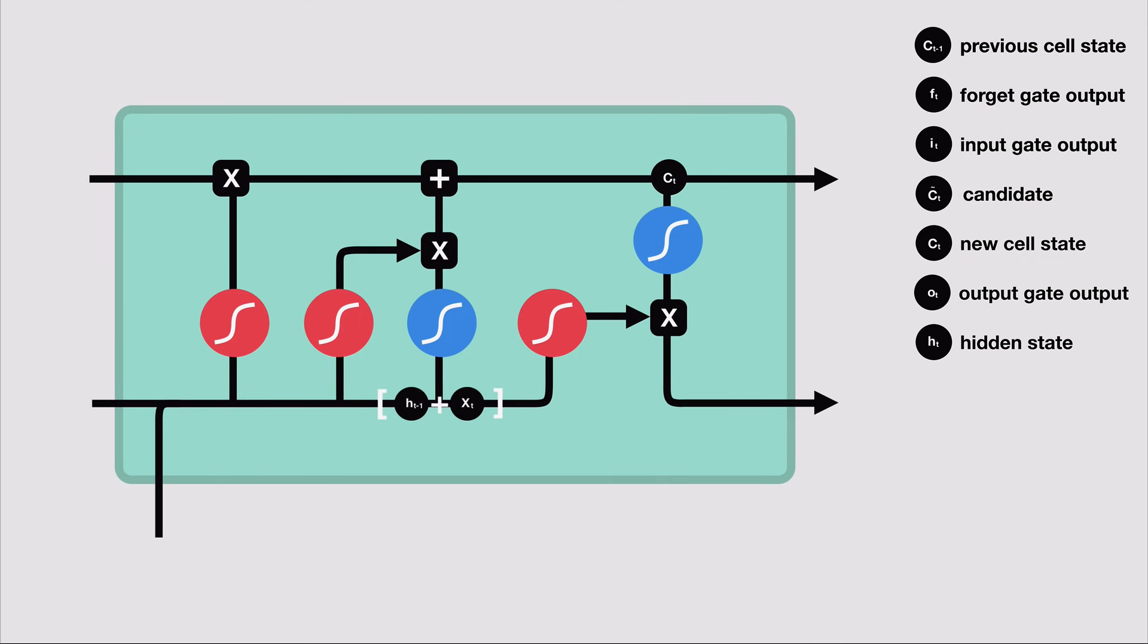Last, we have the output gate. The output gate decides what the next hidden state should be. Remember that the hidden state contains information on previous inputs. The hidden state is also used for prediction. First, we pass the previous hidden state and the current input into a sigmoid function. Then we pass the newly modified cell state to the tanh function. We multiply the tanh output with the sigmoid output to decide what information the hidden state should carry. The output is the hidden state. The new cell state and the new hidden state is then carried over to the next time step.